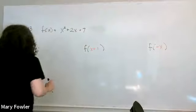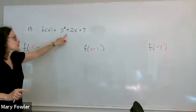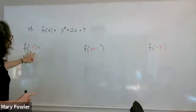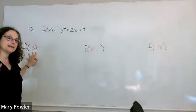All right, so the function we're interested in is f of x equals x squared plus 2x plus 7. And we want to find f at minus 3.